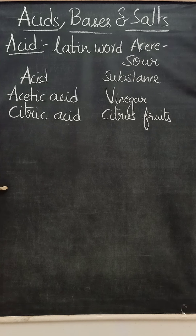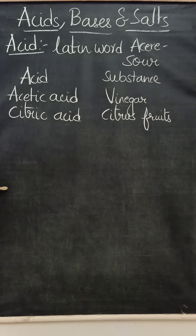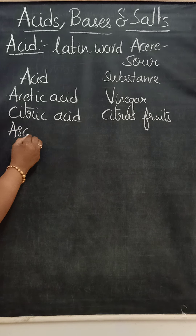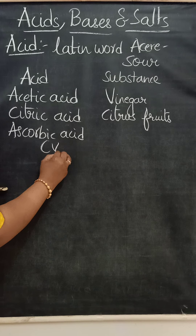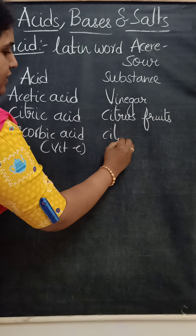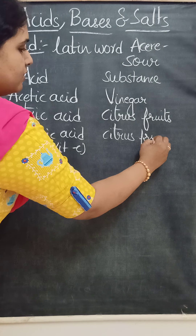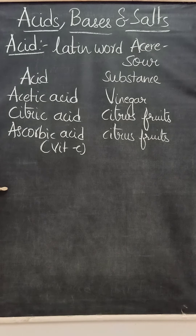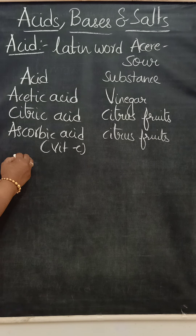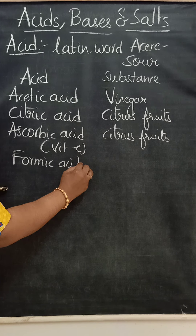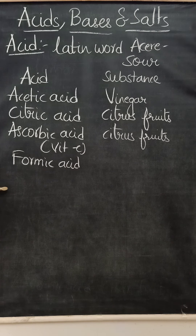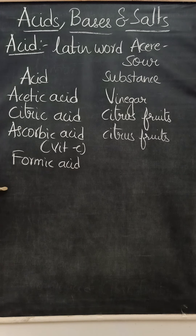The next acid is ascorbic acid, or Vitamin C, which is also present in citrus fruits. The ant sting contains an acid called formic acid. That's why when an ant bites us, we feel an itching sensation and reddening of that area - because the ant releases formic acid when it bites.